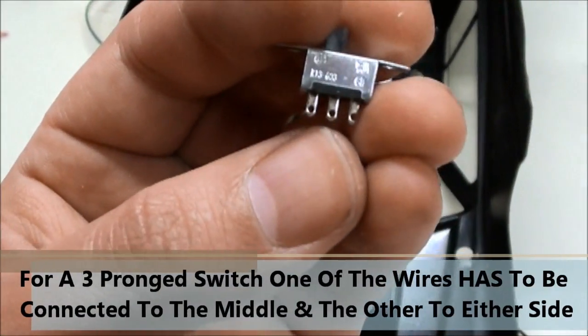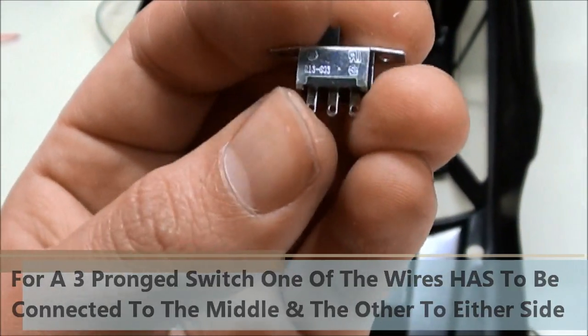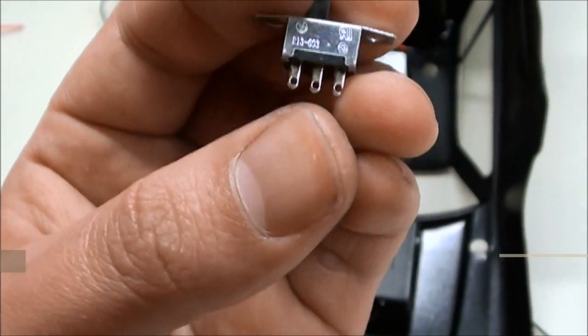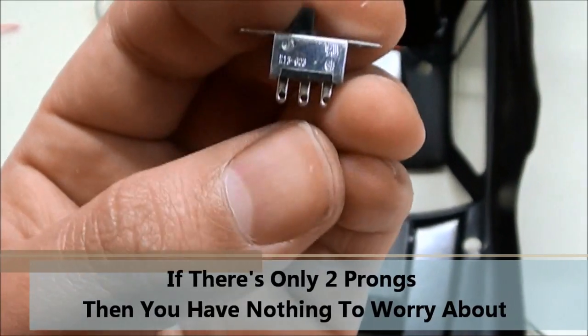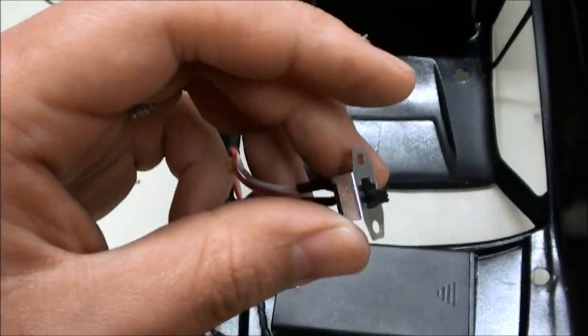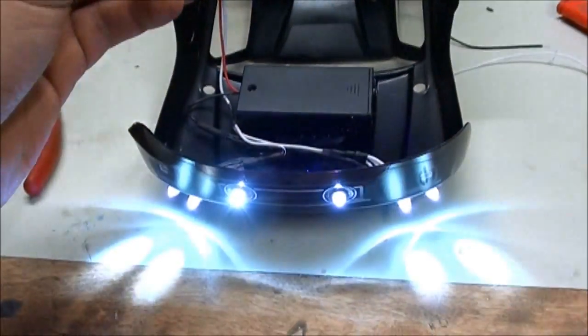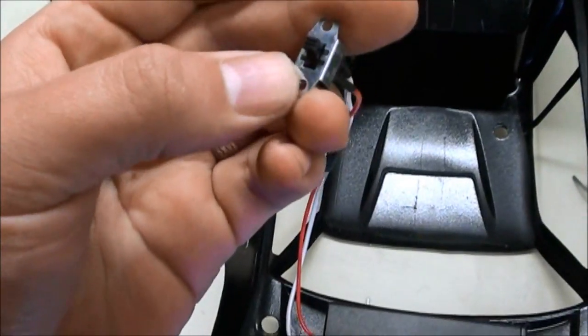I'm going to have one wire run to the middle and then the other wire can go to the left or right. What I don't want to do is put a wire on each end, otherwise there won't be a connection. One has to be in the middle. With both of the positive wires going to the switch, I now have control over the LED lights. So all I have to do is mount the switch.